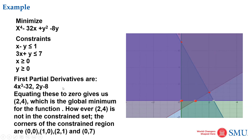Let's take the first two partial derivatives of this function: differentiating keeping x constant and keeping y constant, we get two expressions. We substitute all boundary points — (0,0), (1,0), (2,1), and (0,7) — and find that the new boundary coordinate is (2,4). However, (2,4) is outside our boundary domain, so we cannot use it directly. Let's proceed to the next iterations.